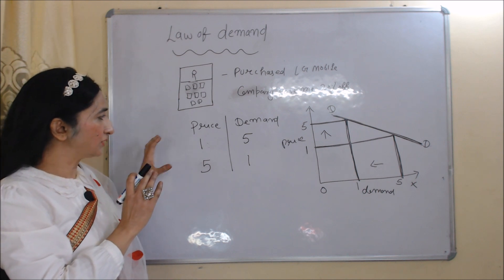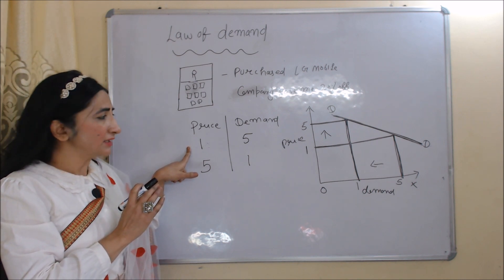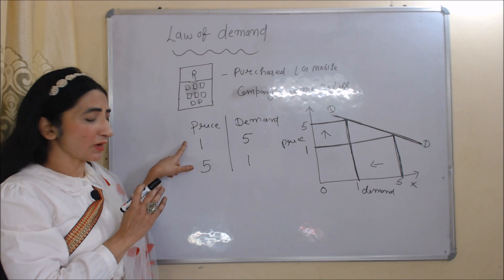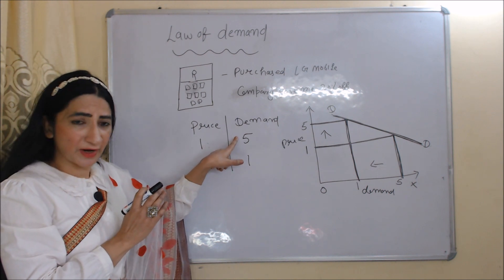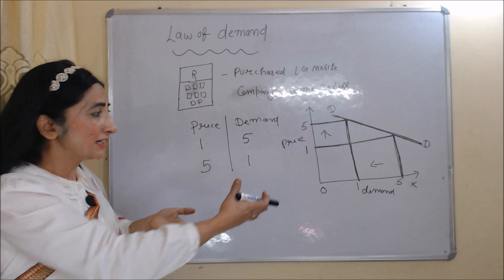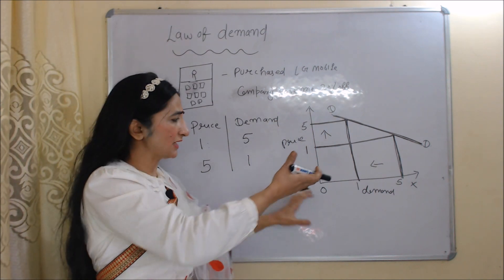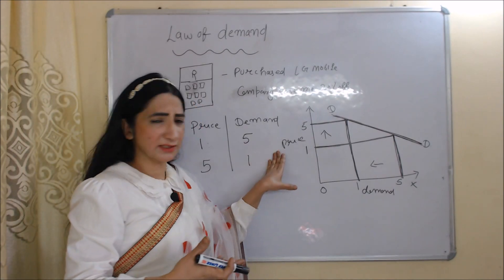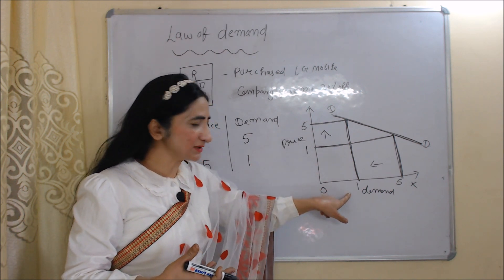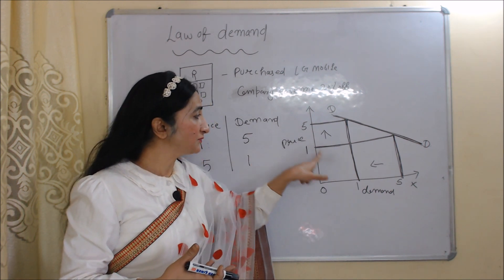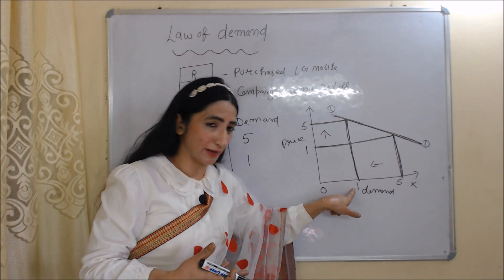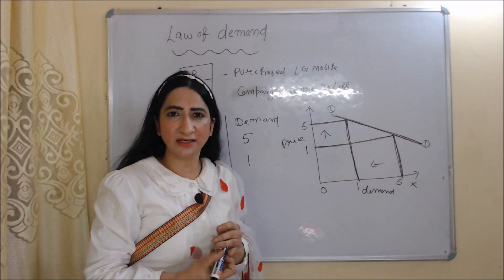In this table, you can see when price is 1, demand is 5. As price increases from 1 to 5, demand falls from 5 to 1 — meaning demand is only influenced by price. In the diagram, you can see the same thing. On the x-axis we have demand, on the y-axis we have price. When price is 5, demand is 1. As price increases from 1 to 5, demand falls from 5 to 1. And this DD is our demand curve.